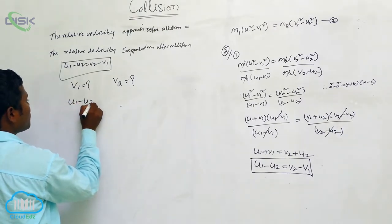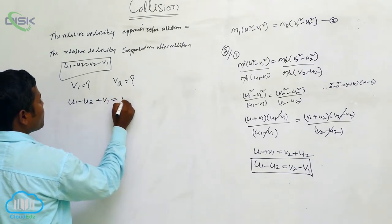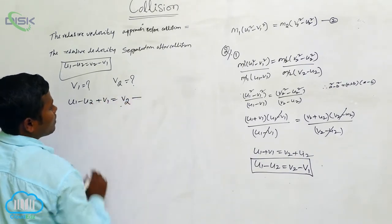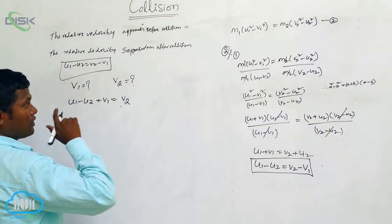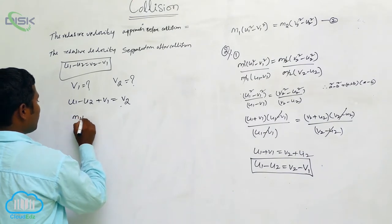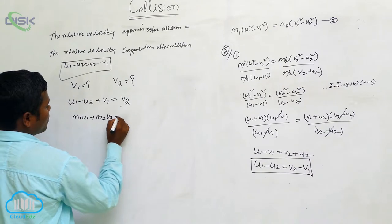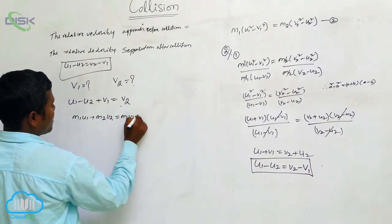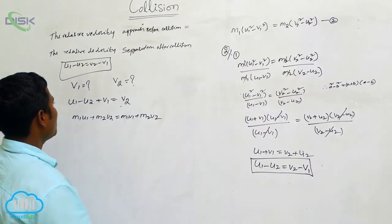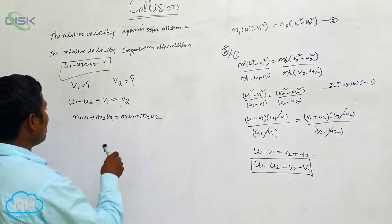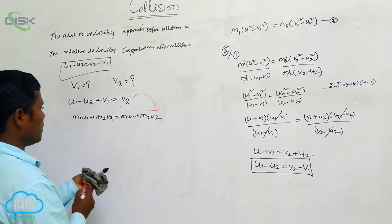U1 minus U2 is equal to V2 minus V1. From this equation, can I substitute the V2 value into the momentum conservation equation? So substituting V2: from the relative velocity equation, V2 is equal to U1 minus U2 plus V1.